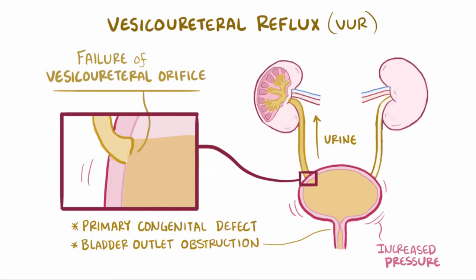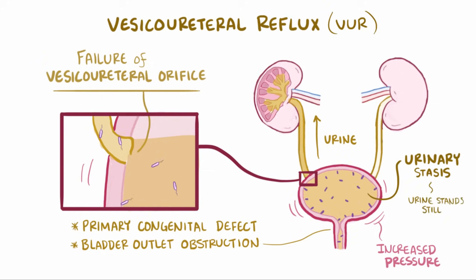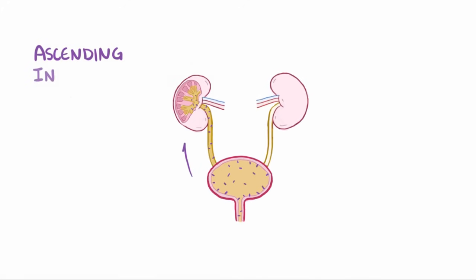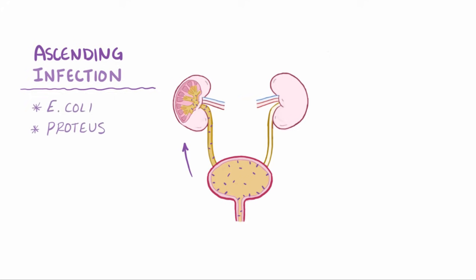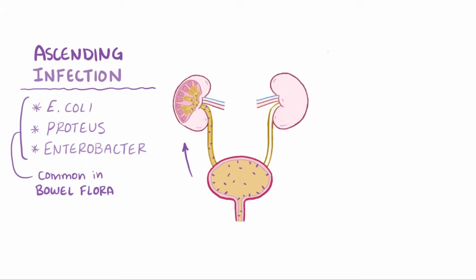As kind of a double whammy, obstruction also leads to urinary stasis, where urine stands still, which makes it easier for bacteria to adhere and colonize the urinary tract. For ascending infections that cause acute pyelonephritis, the most common organisms are E. coli, Proteus species, and Enterobacter species, all of which are commonly found in the bowel flora.